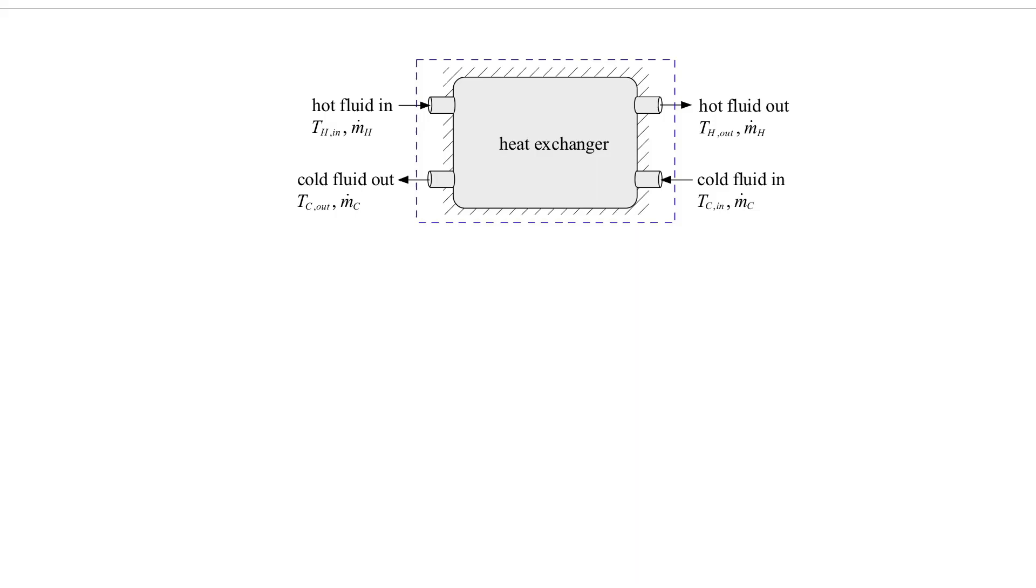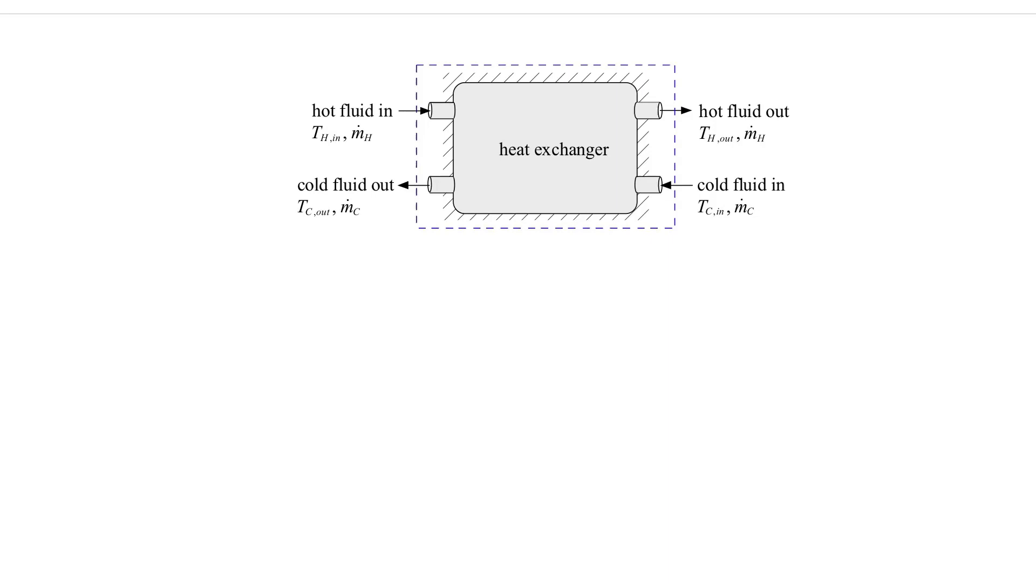In this diagram, we have two fluids in a counterflow arrangement. Not drawn but implied is that they're separated. We have hot fluid coming in here and cold fluid coming in here, counterflow. Normally what we're going to specify about this problem would be we know the temperature coming in, we probably know the mass flow rate on the hot side and the cold side, we probably know the temperature coming in on the cold side. We know the inlet conditions that we're designing for.